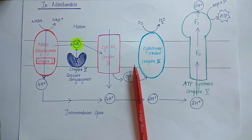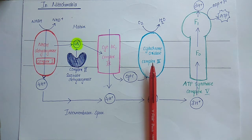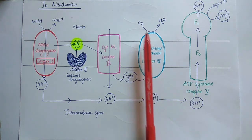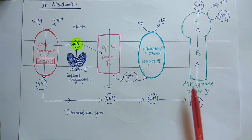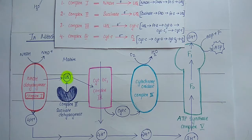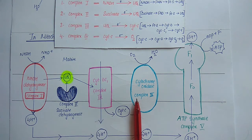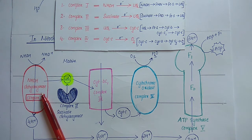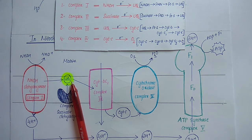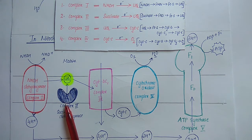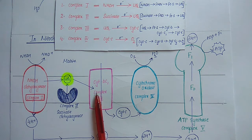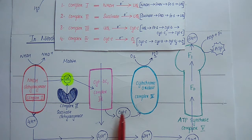There are four important complexes involved in the transfer of electrons from NADH or FADH2 to oxygen, and a fifth complex called ATP synthase involved in ATP synthesis. The electron transport chain consists of four multi-protein complexes, all embedded in the inner mitochondrial membrane. Complex 1 catalyzes electron transfer from NADH to ubiquinone, complex 2 from succinate to ubiquinone, complex 3 from ubiquinone to cytochrome C, and complex 4 from cytochrome C to oxygen.